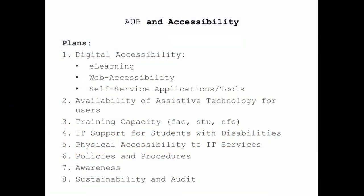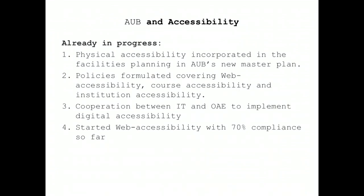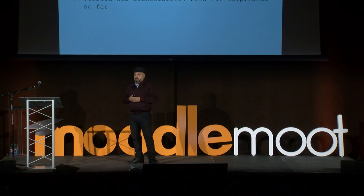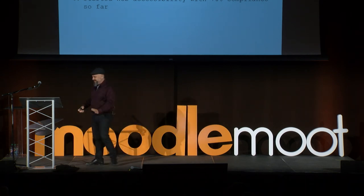We are doing a lot in terms of digital accessibility, assistive technology training, and capacity building — training our faculty, staff, and students. We're raising awareness and making sure everything we do is sustainable. We've developed policies including a web accessibility policy, course accessibility policy, institutional accessibility policy, and procurement accessibility policy. That's basically what we're doing at AUB. Thank you, and I'm happy to take questions and share experiences.